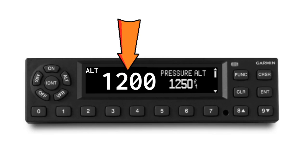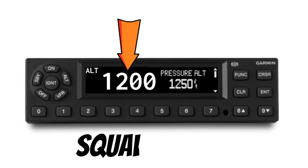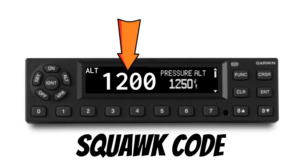Take a look at this four-digit code on the display screen. This is what we call the transponder code, also known as the squawk code. On this particular model, you can change your squawk code by pushing these numbers on the keypad at the bottom of the transponder. On older models, these numbers are changed by rotating little round dials for each individual number.